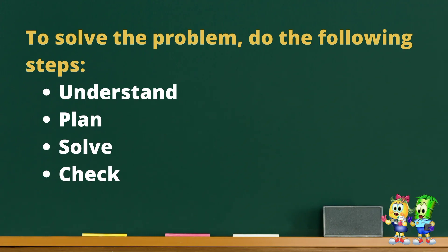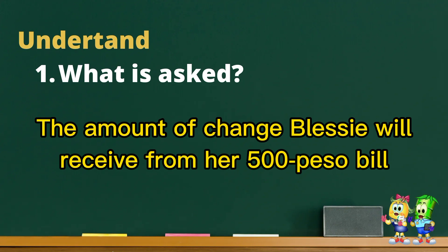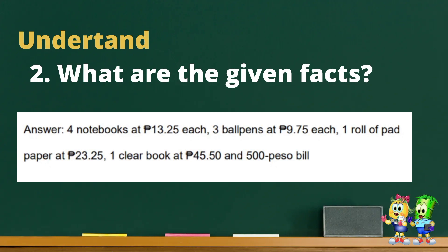To solve the problem, do the following steps: First, Understand. Second, Plan. Third, Solve. And fourth, Check. To help you understand the problem, let us answer the following questions. Number one, what is asked? It is the amount of change Blessie will receive from her five-hundred-peso bill. What are the given facts? Four notebooks at thirteen pesos and twenty-five centavos each; three ballpens at nine pesos and seventy-five centavos each; one roll of pad paper at twenty-three pesos and twenty-five centavos; one clear book at forty-five pesos and fifty centavos; and a five-hundred-peso bill.